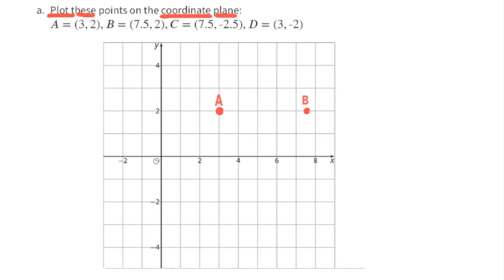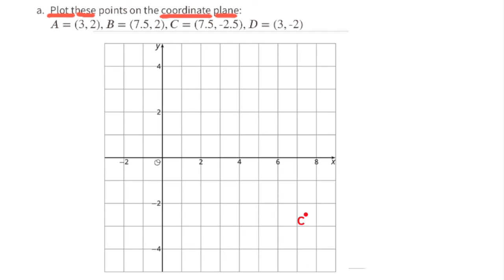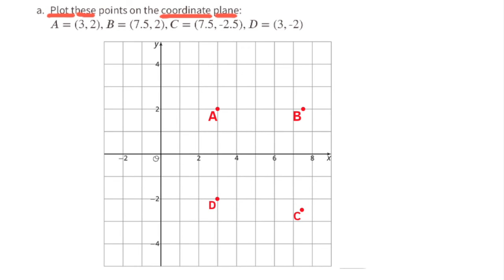Point C has coordinates (7.5, −2.5): start at the origin, move right 7.5 units, then down 2.5 units vertically. Point D has coordinates (3, −2): start at the origin, move right 3 units along the x-axis, then down 2 units vertically.